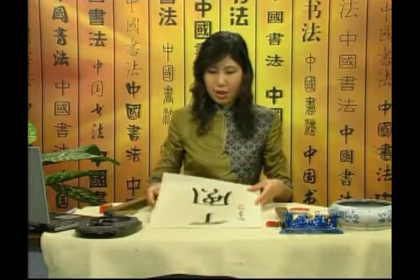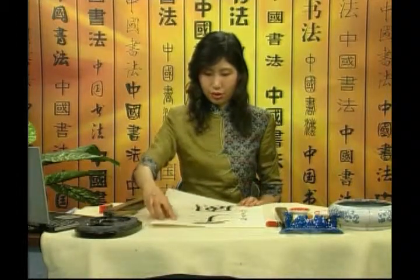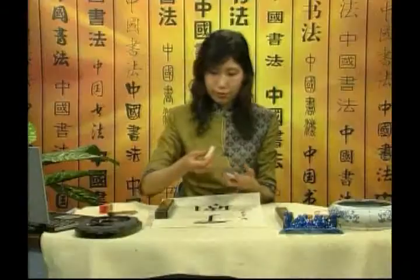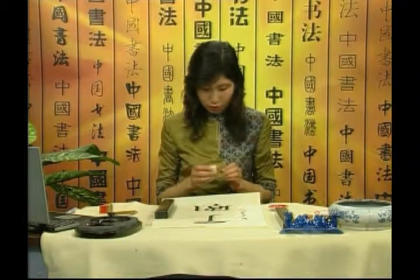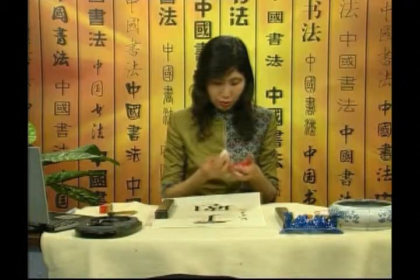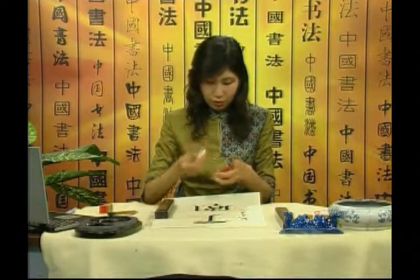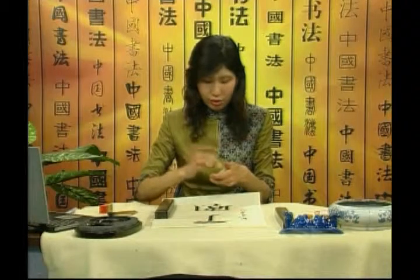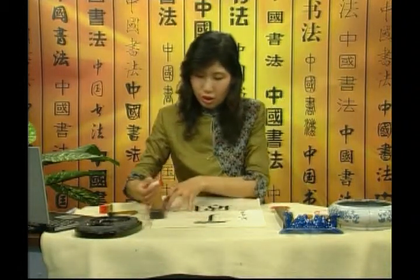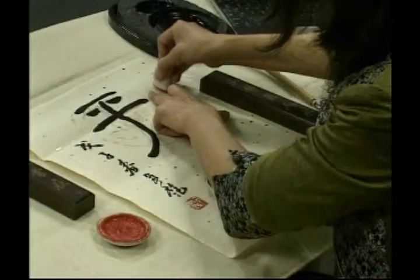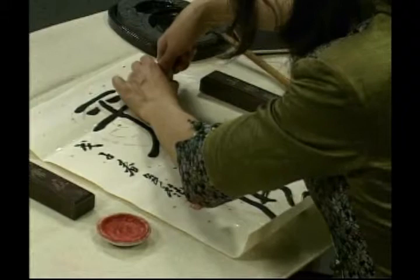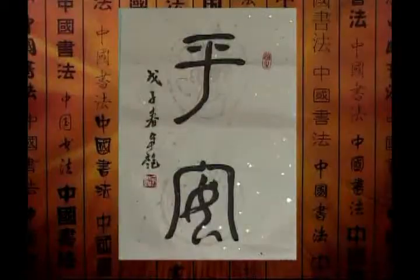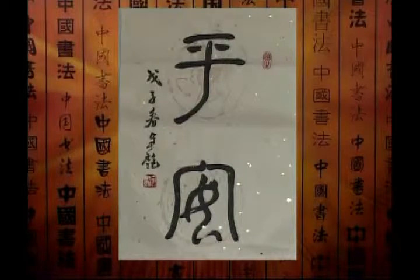By the same token, we place the seal in this position at the front. When you ink the seal, you have to press hard and lift softly in order to get all sides stained with ink. You have to press quite hard, then lift softly. The piece is complete — our vertical banner is complete.